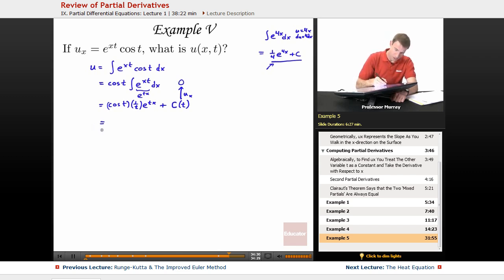So let me collect my terms and simplify that. 1 over t times e to the tx times cosine of t plus, I'm going to say, any function of t. So this could be any function of t, this is my u of xt.